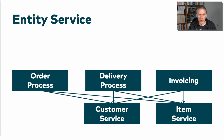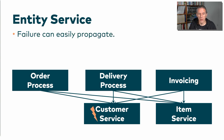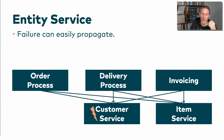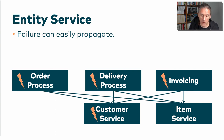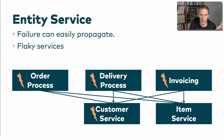Talking about resilience with entity services: if there is a failure in the service that takes care of customers, what's the fallback? Is there a default customer? It's hard to come up with any sensible resilience approach at all. Probably, as soon as the service that takes care of customers fails, all of the other services will fail too — so we end up with the flaky service anti-pattern again.